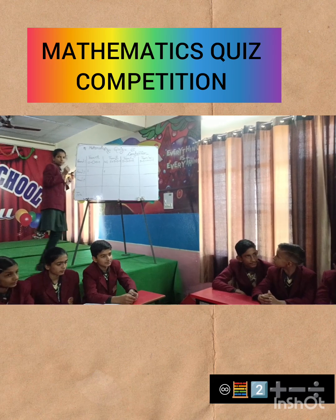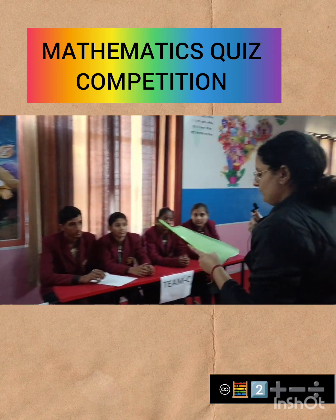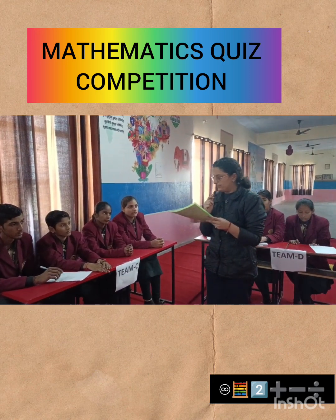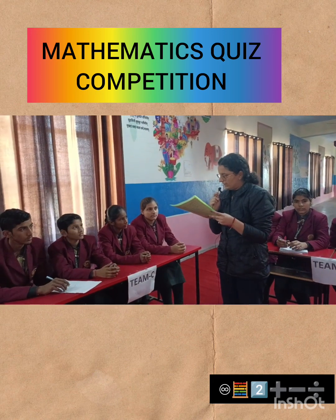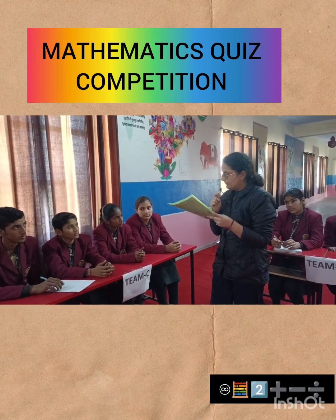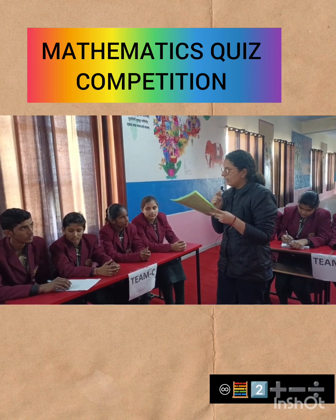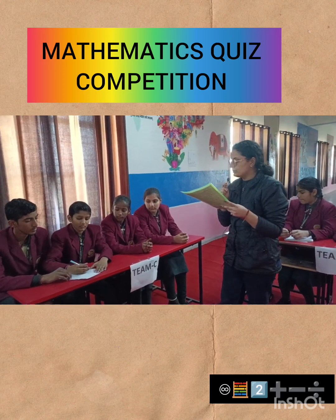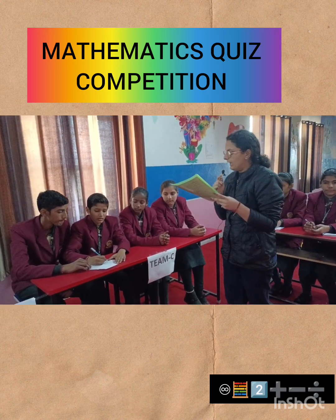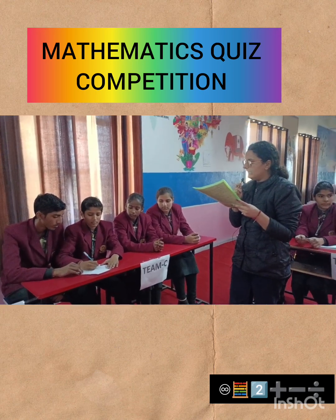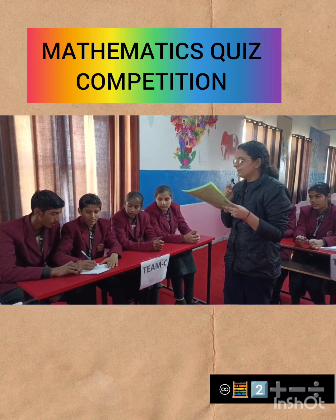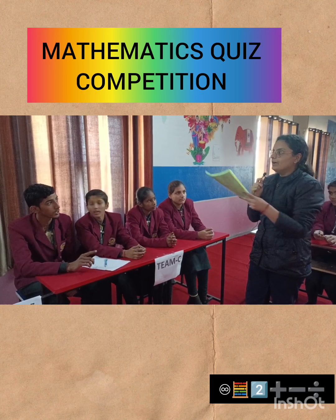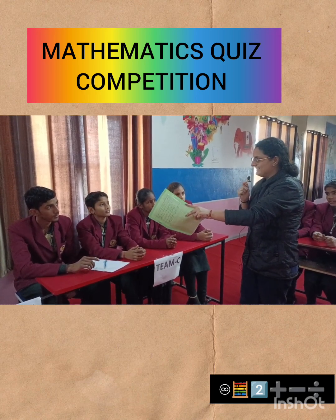Next question for Team C: when bases are the same but powers are different and the numbers are divided — a to the power m divided by a to the power n — what is the solution? Team C gives a wrong answer — minus one.